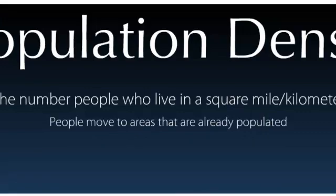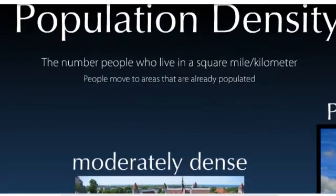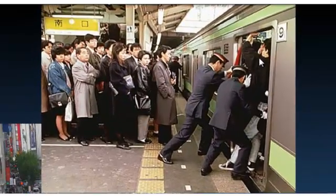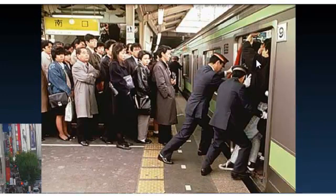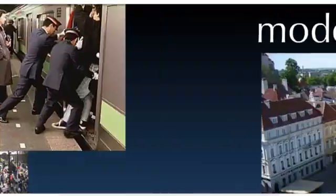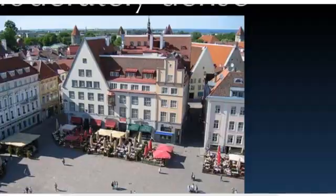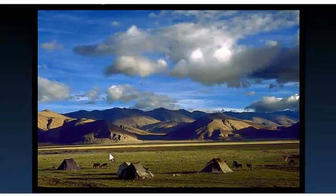What does that mean in real life? You have very dense areas like Tokyo, Japan — they have subway pushers to smash people onto their subways, a very different way of living. We have moderately dense areas where it's a small town with enough people to have some social events and maybe rush hour. And then you have almost no people living in a very low population density area.